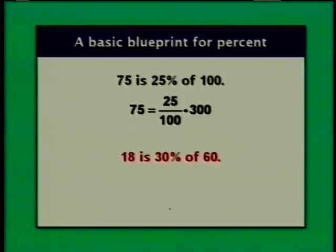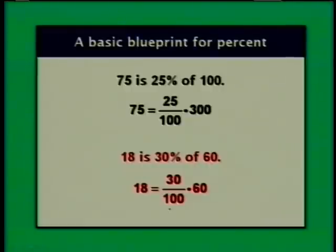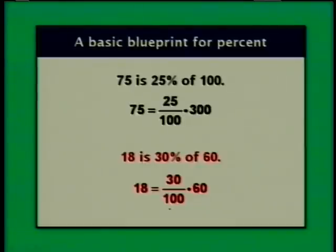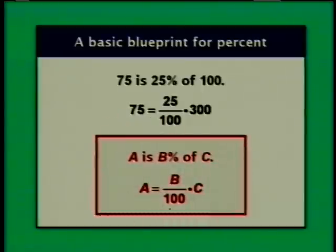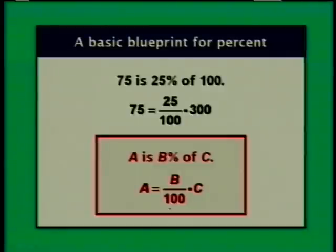We saw that 18 equals 30 over 100 times 60: 30 times 60 is 1,800, and 1,800 divided by 100 is indeed 18. So our basic blueprint is: when we say 'A is B percent of C,' that's equivalent to the equation A equals B over 100 times C. This is our basic blueprint.